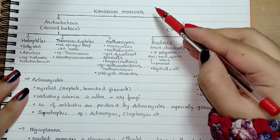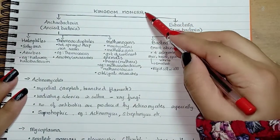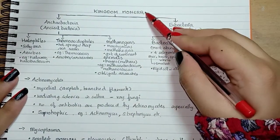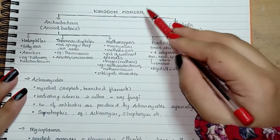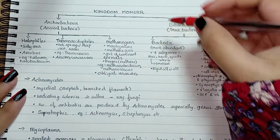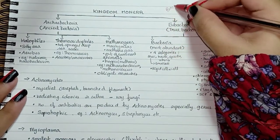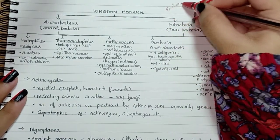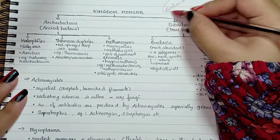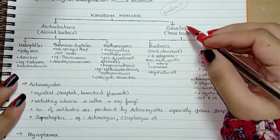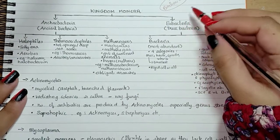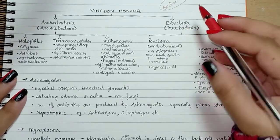Kingdom Monera is a kingdom of prokaryotes, and bacteria are the sole members of this kingdom.